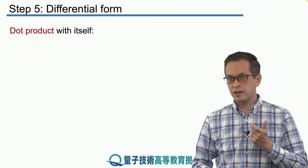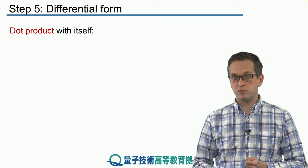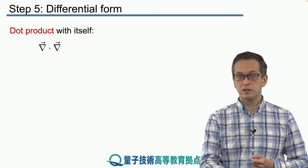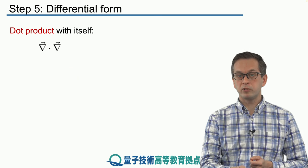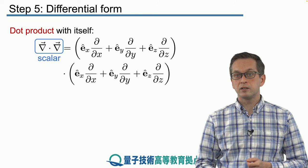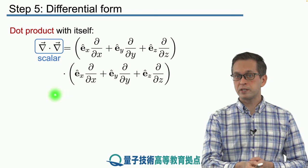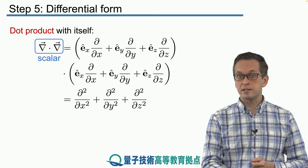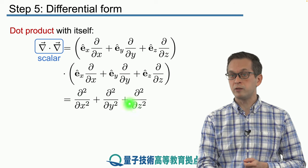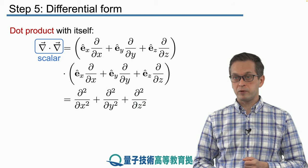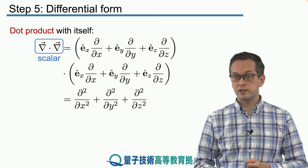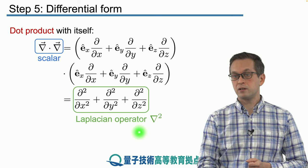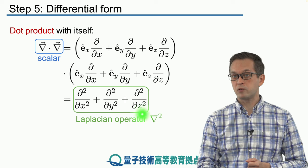Because del is a vector operator, we can take dot products as well. Taking the dot product of the del operator with itself — del dot del — expands to give a sum of second-order partial derivatives with respect to x, y, and z. This is the familiar Laplacian, which we saw when discussing wave equations, and it's denoted as del squared or nabla squared.